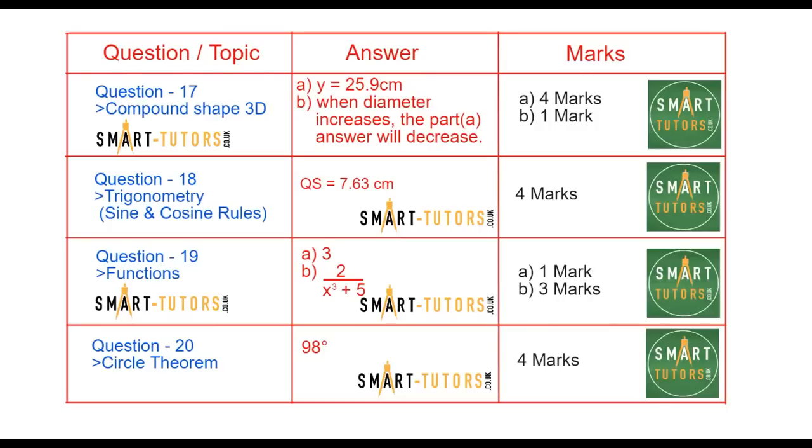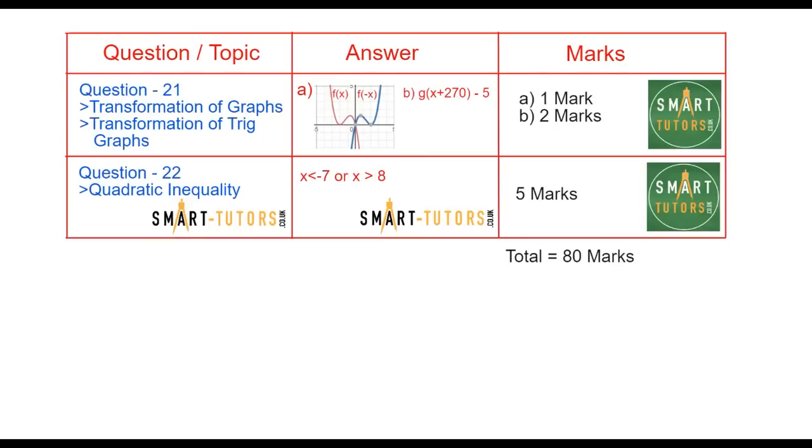Question number twenty is circle theorem. Question number twenty-one is transformation of the graph, and combined with part B is a transformation of the trigonometric graph. Question number twenty-two is quartic inequality. There are two given pieces of information, and you need to find the solution which satisfies both inequalities. It's a five mark question. That's a total of 80 marks.